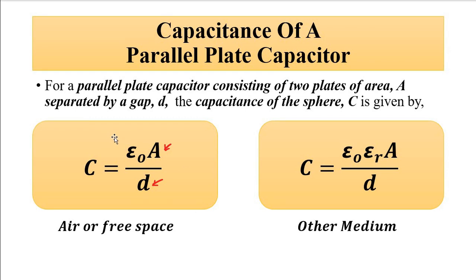The third parameter is permittivity. If the sensor is placed in air or free space, only absolute permittivity comes into play. If placed in any other medium, both absolute and relative permittivity of the medium apply. The capacitance is inversely proportional to the separation gap, directly proportional to the overlap area, and directly proportional to the permittivity. The more the relative permittivity of the medium, the more electric field lines pass through it, and the capacitance increases.